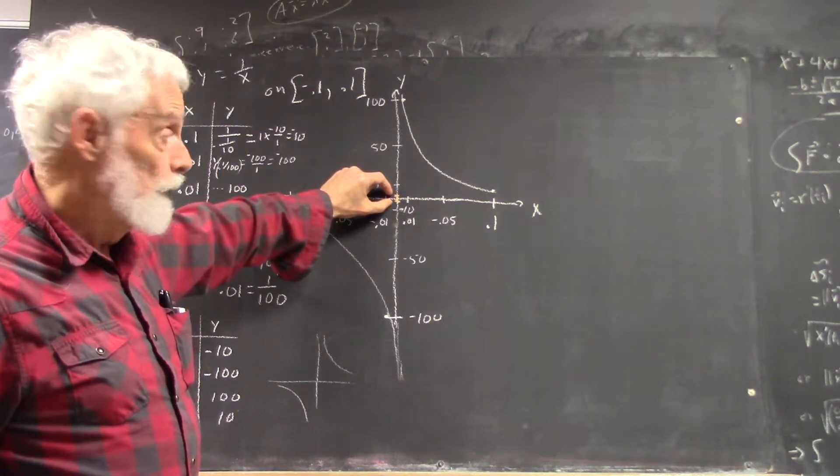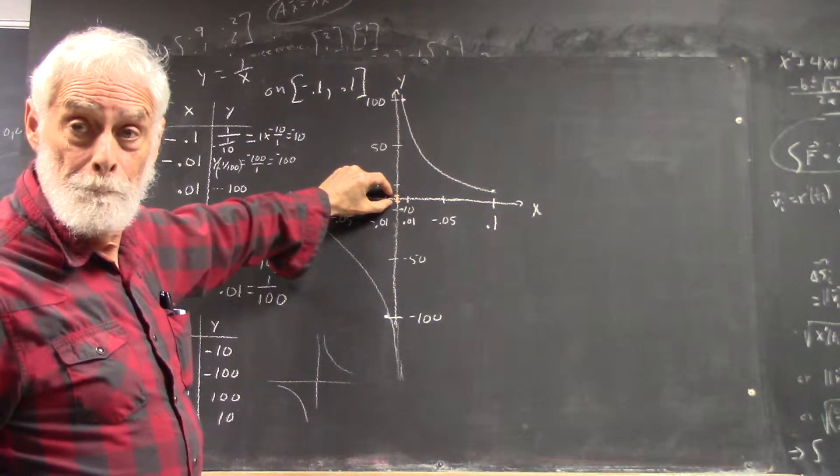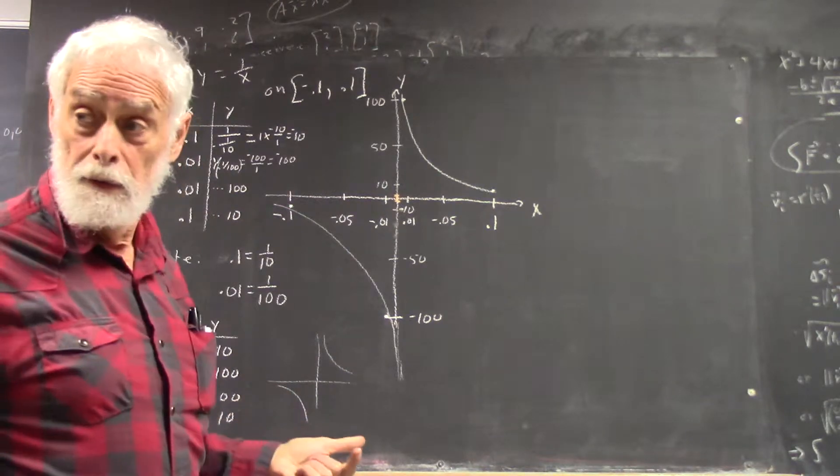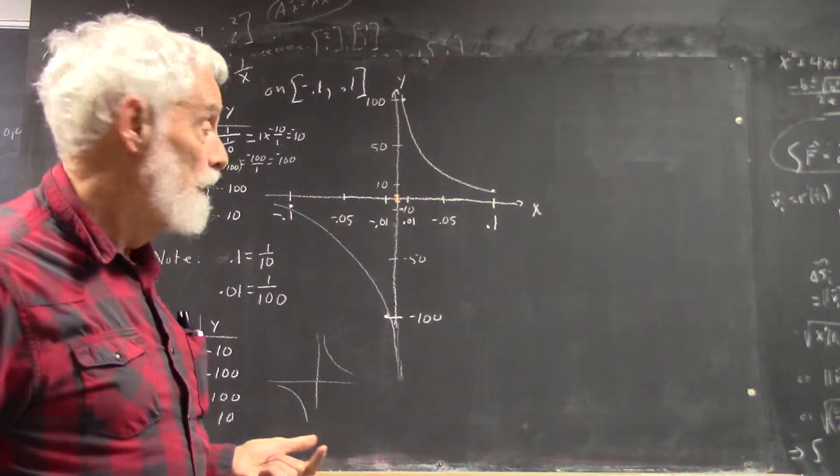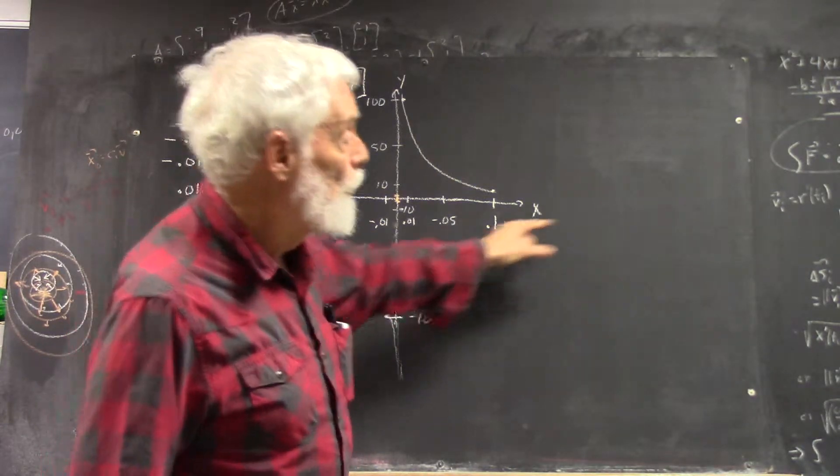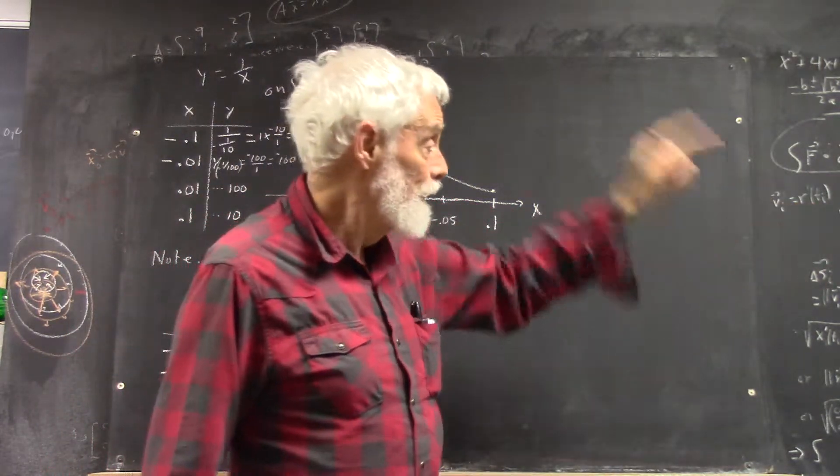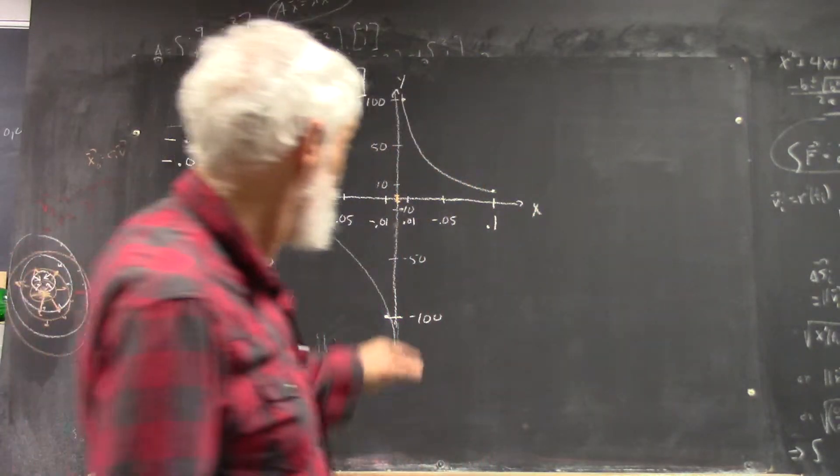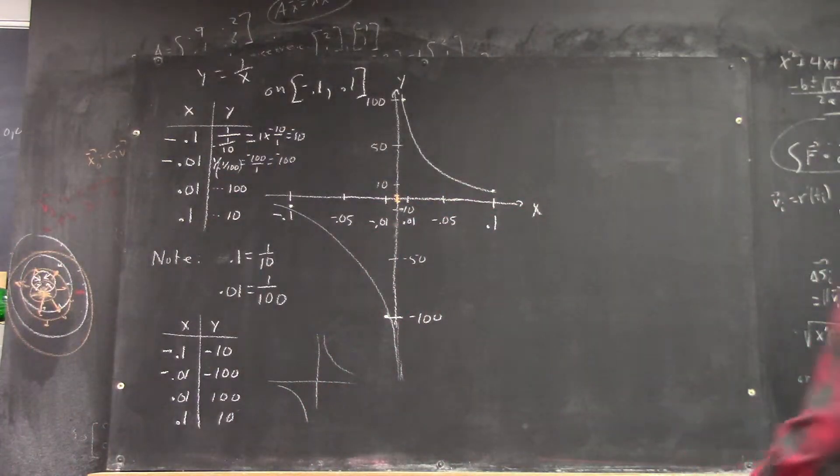Where would the x values be? Well, where would 1 be on this scale? Ten times farther in other directions? Yeah, it would have to be ten times further than this, right? That would be way off the board. There isn't even another board behind it to write on out there. It would be about here, right?